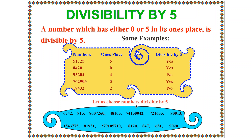Now let us choose the numbers divisible by 5 from the list given. Look at these numbers quickly, identify which are divisible by 5 and which are not. Try and do it yourself.